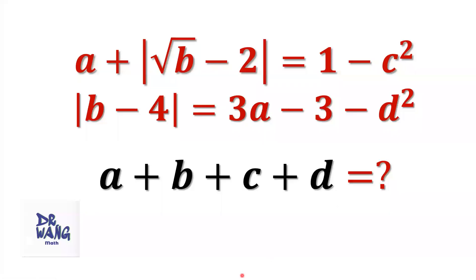Hello, everyone. I'm Dr. Wang. Here is the question. If a plus the absolute value of the square root of b minus 2 equals 1 minus c squared, and the absolute value of b minus 4 equals 3 times a minus 3 minus d squared, what is the value of the sum a plus b plus c plus d?